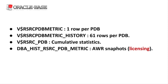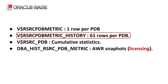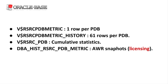Oracle provides views to monitor the resource usage of PDBs. The views contain similar information but for different retention periods. The V$RSRC_PDB_METRIC view contains a single row per PDB holding the last of the 1 minute samples. The V$RSRC_PDB_METRIC_HISTORY view has 61 rows per PDB holding the last 61 one-minute samples. The V$RSRC_PDB view holds cumulative statistics since the CDB resource plan was activated.